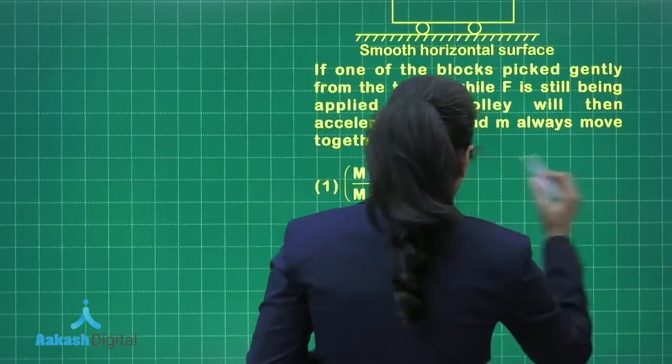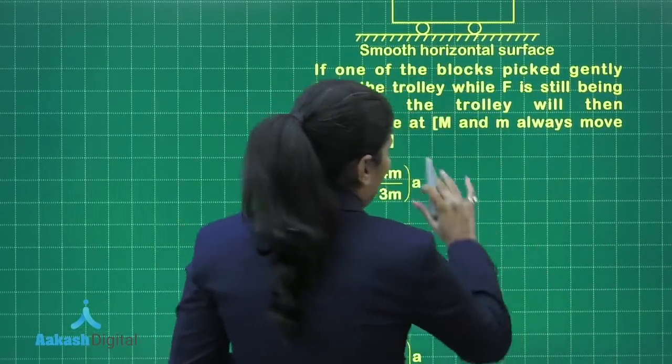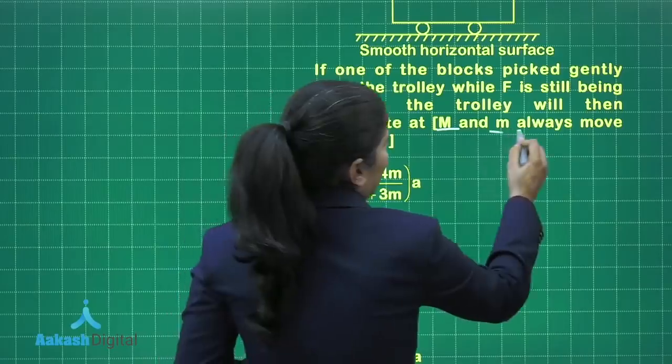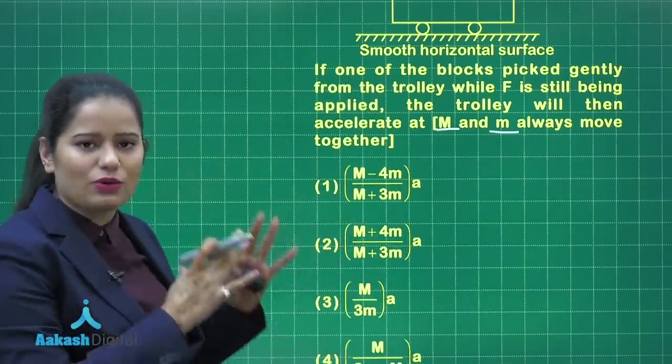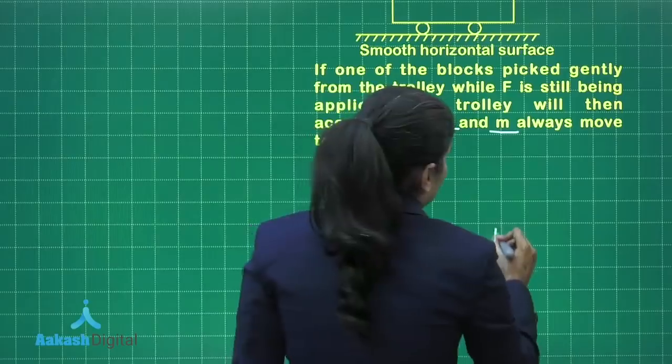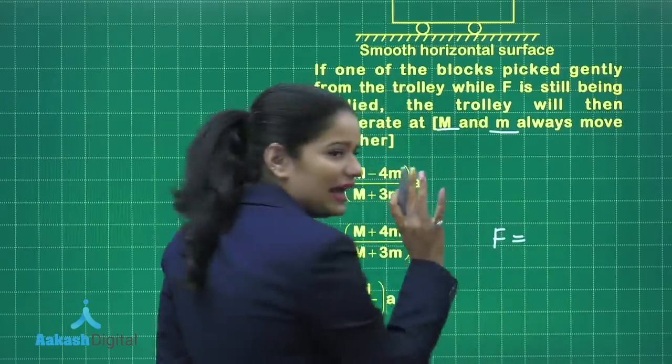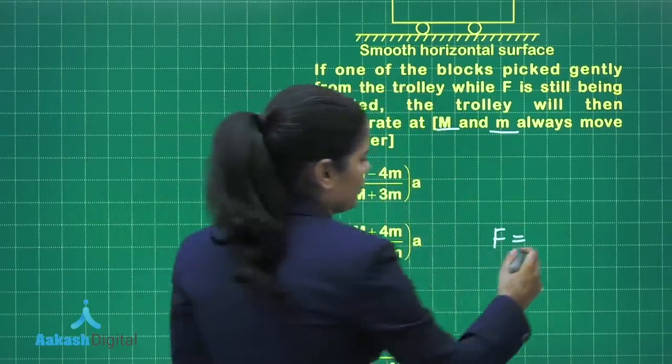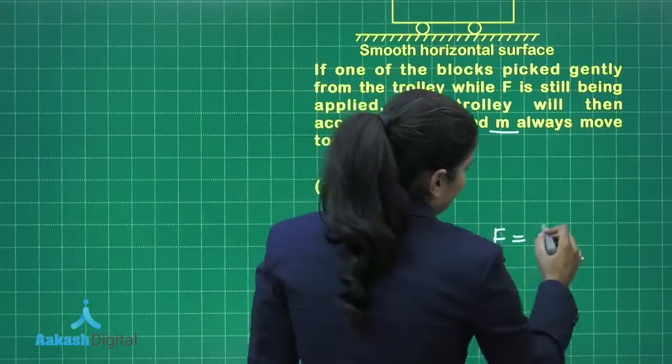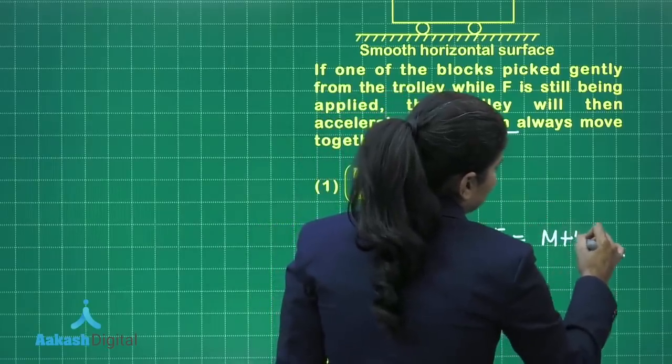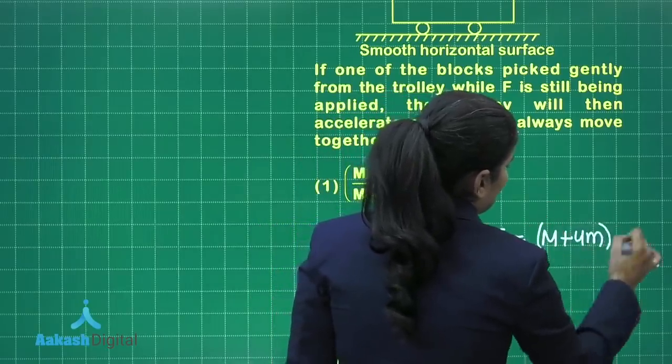In the first case, I can write that as this question says M and M always move together, so all the masses are going to move together. What is going to be the net force? That is F. We are applying the force F on the trolley. So that will be capital M plus 4M into A.